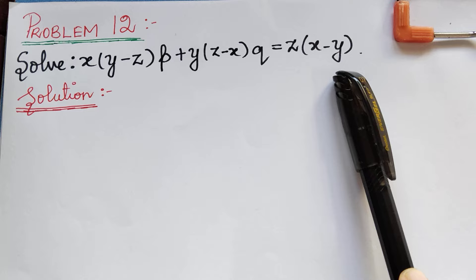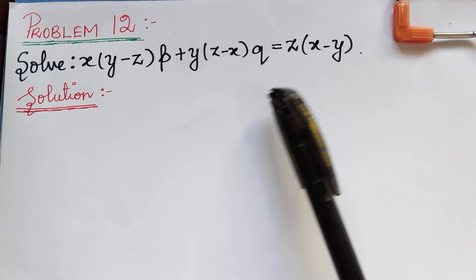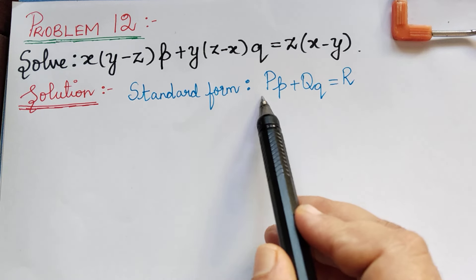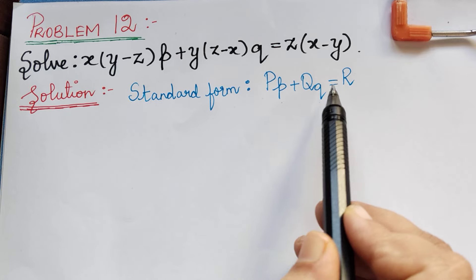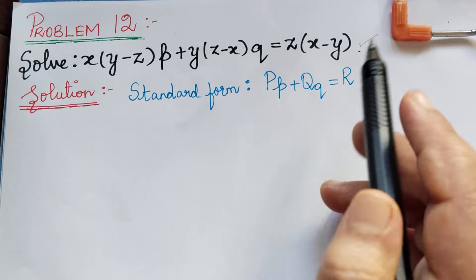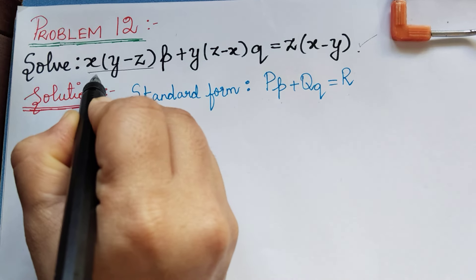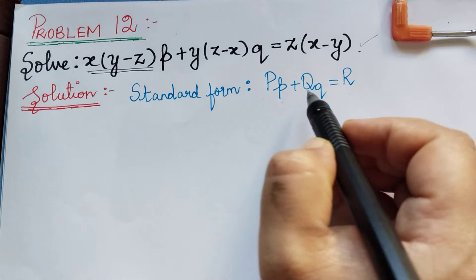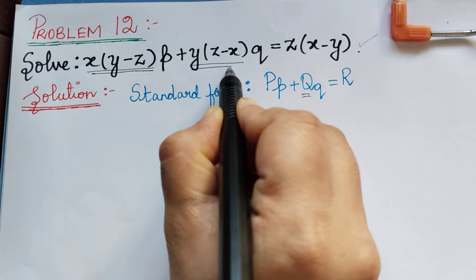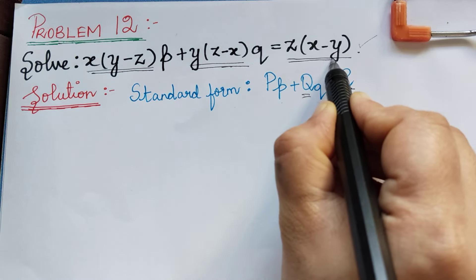When we see this, we understand that this is of the Lagrange's type. So first of all, we have to write the standard form of the Lagrange's type, which is Pp + Qq = R. Comparing this with the given equation, we see that P = x(y−z), Q = y(z−x), and R = z(x−y).